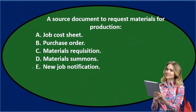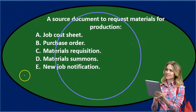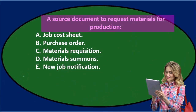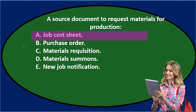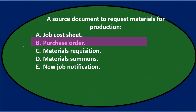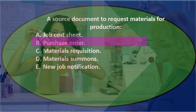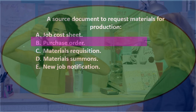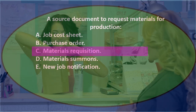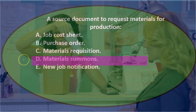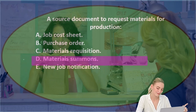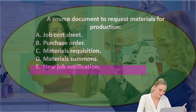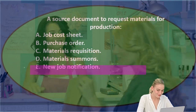Next question: A source document to request materials for production. A. Job cost sheet. B. Purchase order. C. Materials requisition. D. Materials summons. E. New job notification.